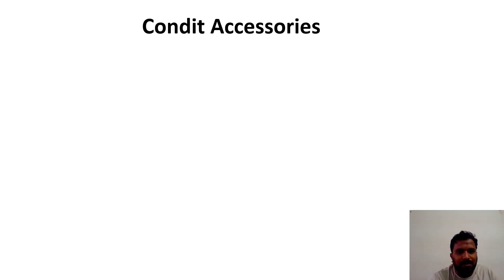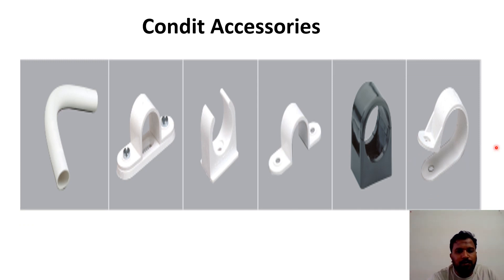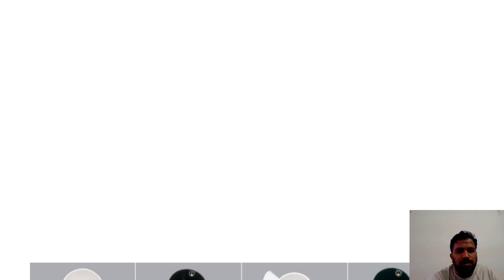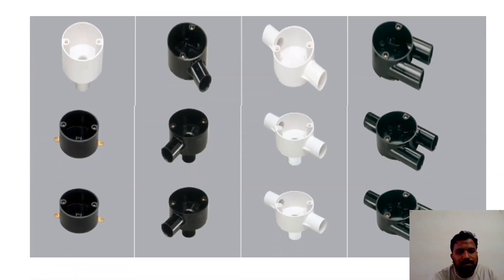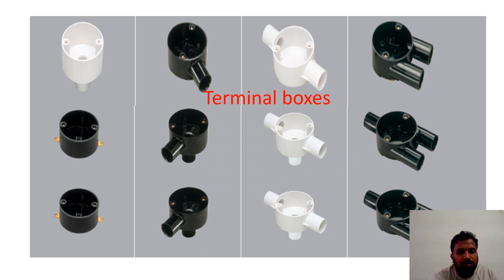Then we will see the conduit accessories. These are a few conduit accessories: bends, saddles, spring clips, straps, quick fit, and conduit clips. Then we have junction boxes — all these are junction boxes, either U-way, one-way, angle-ways, and three-ways. These different types of junction boxes are also called terminal boxes.